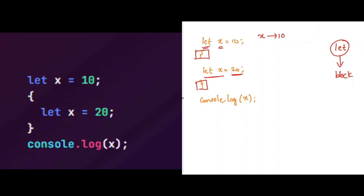Now, as let is block scoped, its value will persist only in this specific area and it will not overwrite the existing value of x, which is 10 here. So the value of x will remain 20 only in this specific area. Due to this, when you log the value of x outside this block, it will still remain 10.